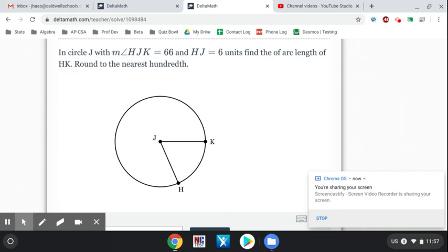Today we'll cover arc length to help you with your Delta Math. One thing you need to know is what it's talking about when it gives you this m∠ symbol - that's talking about the measure of an angle. So we're looking at the measure of angle HJK.